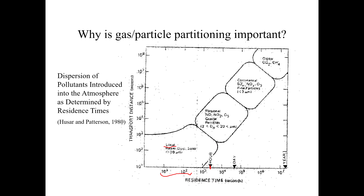If you stick in the atmosphere for more like a day or several days then you have regional transport. In New Jersey we have a problem with ozone in part because of regional transport of precursor gases like NO and NO2 from places like Ohio where they used to burn a lot of coal for power generation. Under Trump, coal use in the United States is down 30% because it's just not economical anymore.